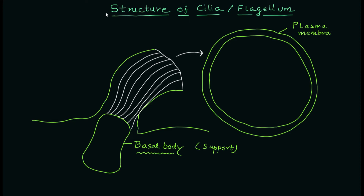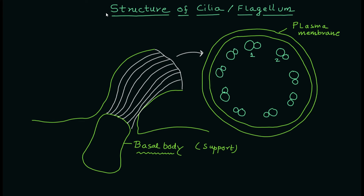As you can see, this is the transverse section of the cilium or flagellum, where you have the outer membrane which is the plasma membrane. Next to that are doublets of sub-fibers, and they are nine in total. That is why it is also known as the nine plus two arrangement — because on the outside you have nine doublets and in the center you have two sub-fibers, so totally it becomes a nine plus two arrangement.